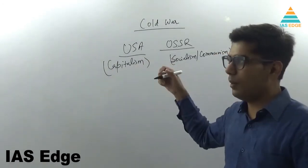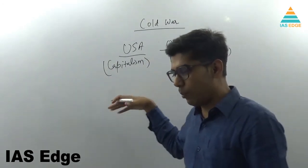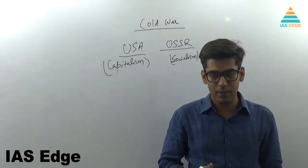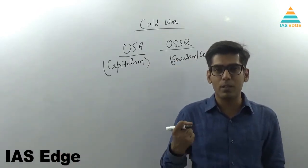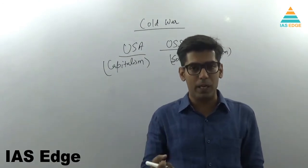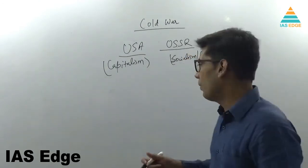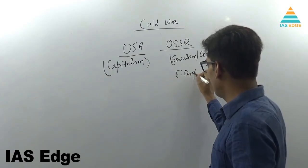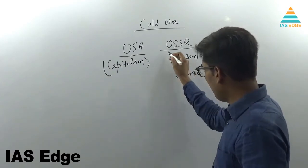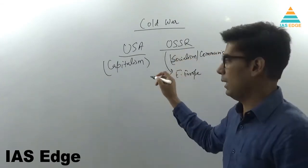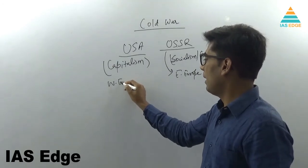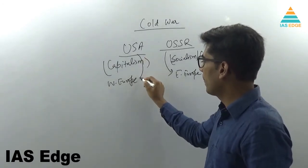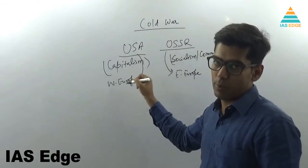Both these countries wanted more countries to commit to their side, and that is why the ideological battle intensified. Entire Eastern Europe came under the influence of USSR, and entire Western Europe came under the influence of USA.